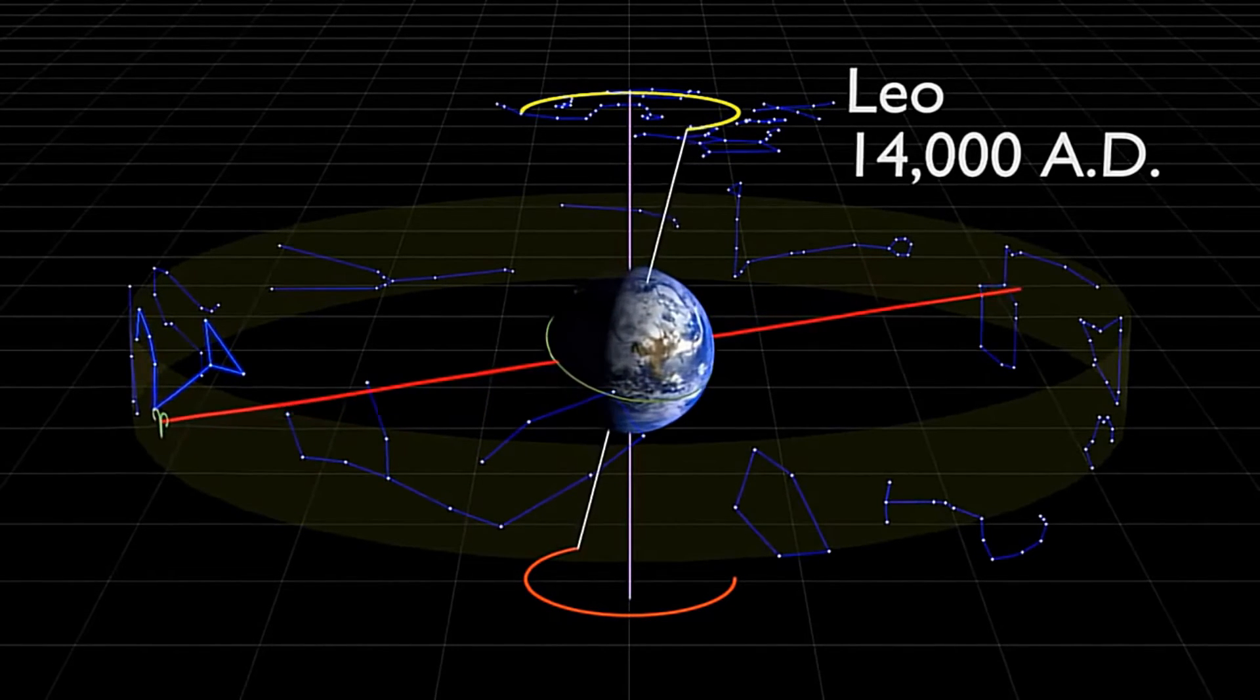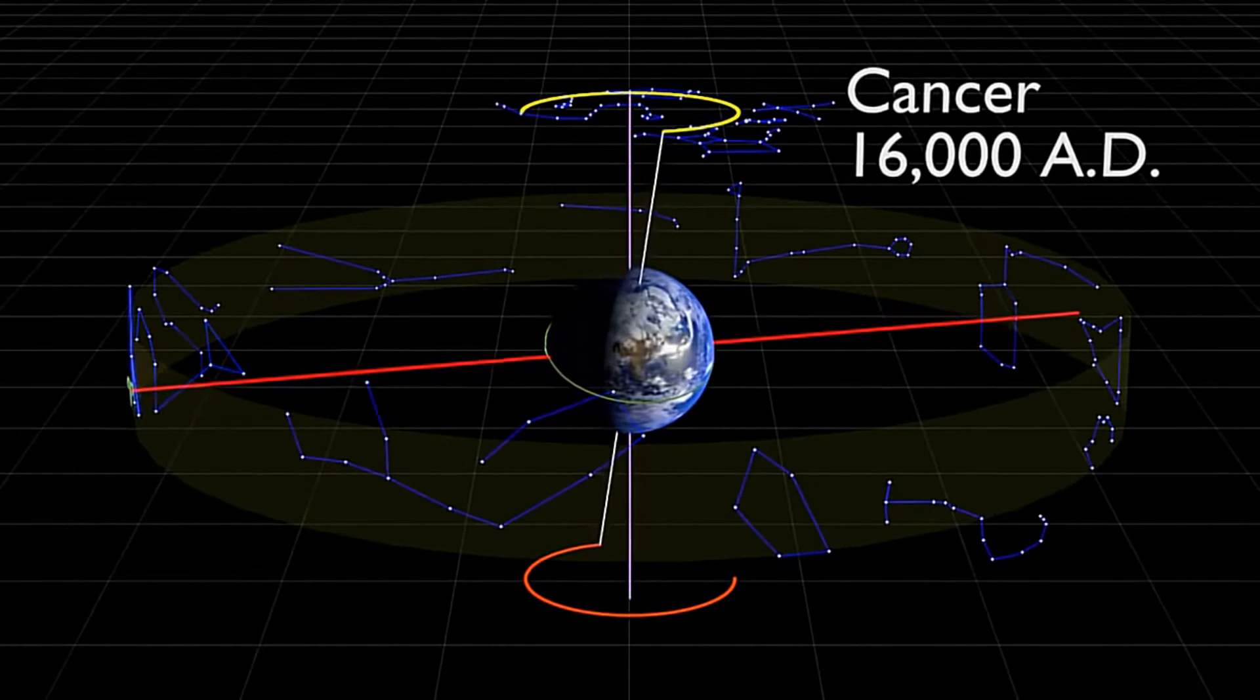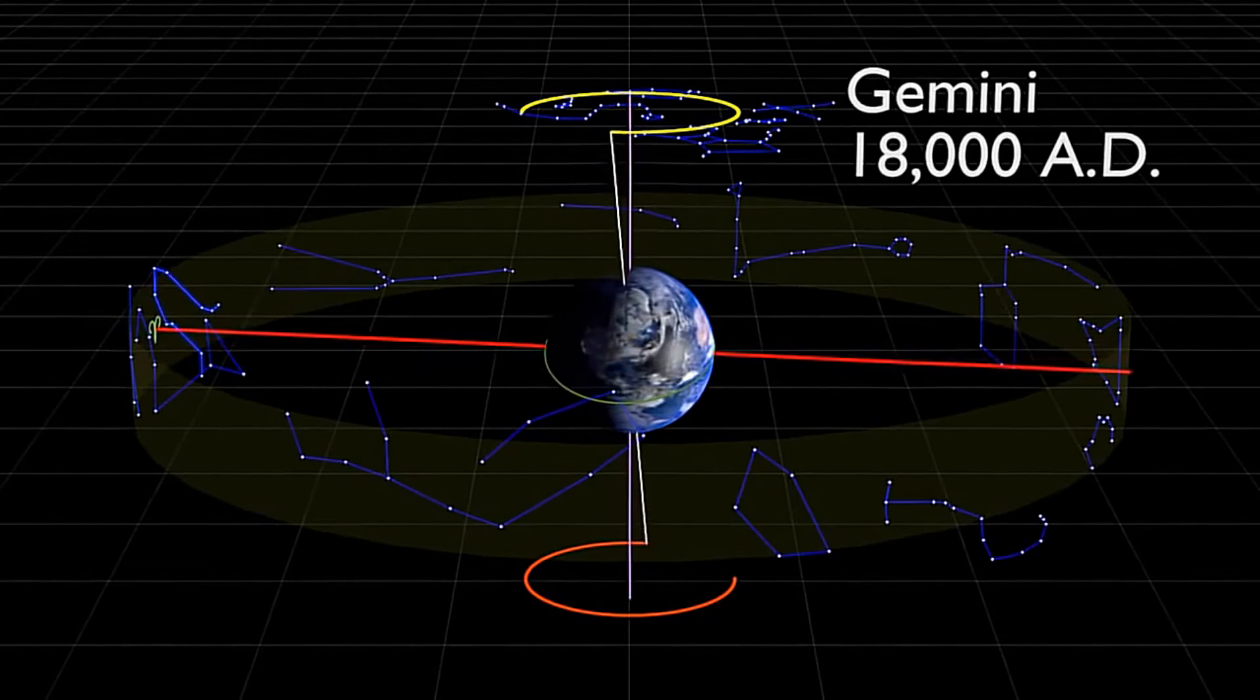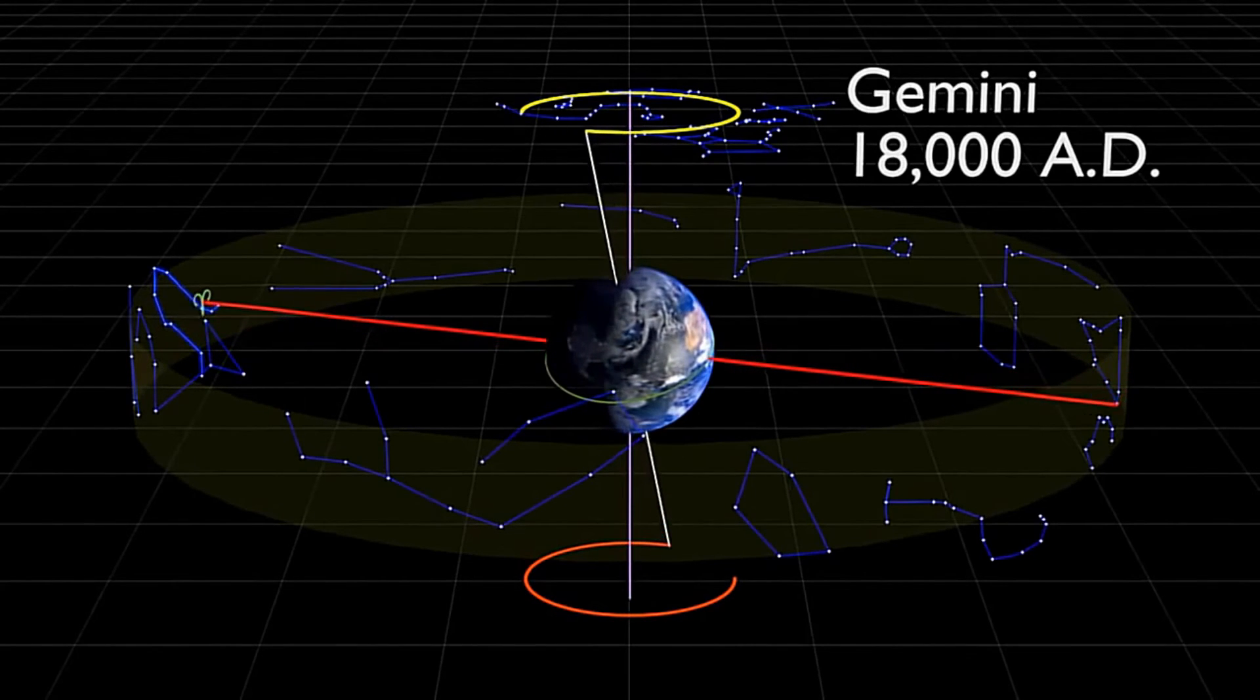In addition to the precession of the equinoxes, the effect of this wobble will also cause the celestial poles to move in a 26,000 year cycle as well.